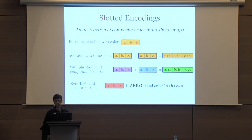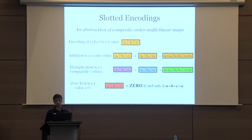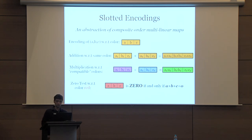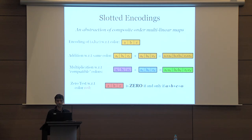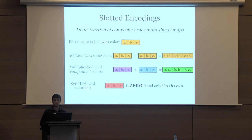For addition, if you have encodings (A1, B1, C1) and (A2, B2, C2) with respect to the same color, you add them to get (A1+A2, B1+B2, C1+C2), performing component-wise addition. Multiplication is performed on encodings with respect to compatible colors, as dictated by the rules of the scheme. If you multiply encodings (A1,B1,C1) and (A2,B2,C2), you get an encoding corresponding to (A1·A2, B1·B2, C1·C2)—multiplication is also component-wise.